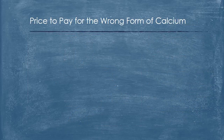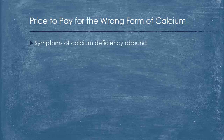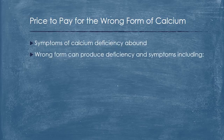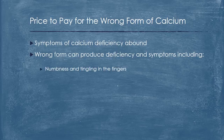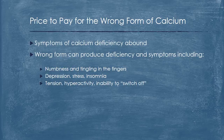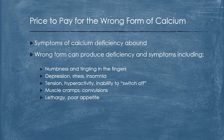What is the price you pay for the wrong form of calcium? Symptoms of calcium deficiency abound. Choosing the wrong form can produce deficiency and symptoms including numbness and tingling in the fingers, depression, stress, insomnia, tension, hyperactivity, inability to switch off, muscle cramps, convulsions, lethargy, poor appetite, abnormal heart rhythm, and the list goes on.